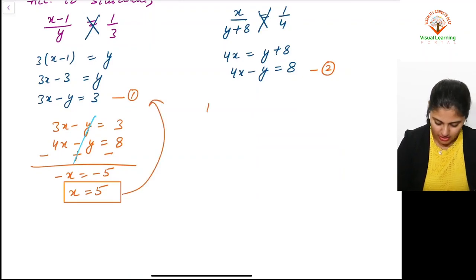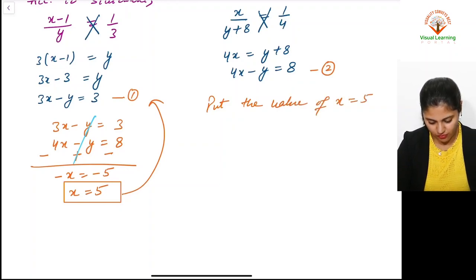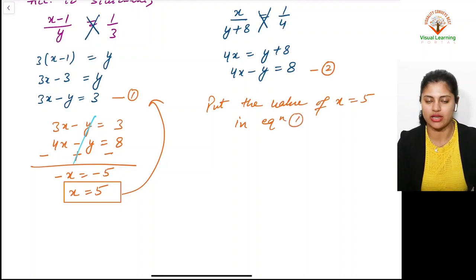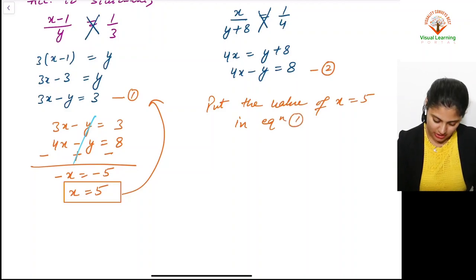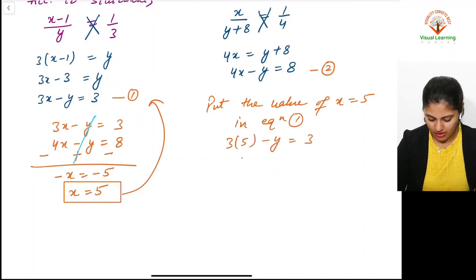Put the value of x = 5 in equation number 1. You can put it in equation 2 also; the answer will be the same. 3(5) - y = 3. Fifteen minus y equals three.